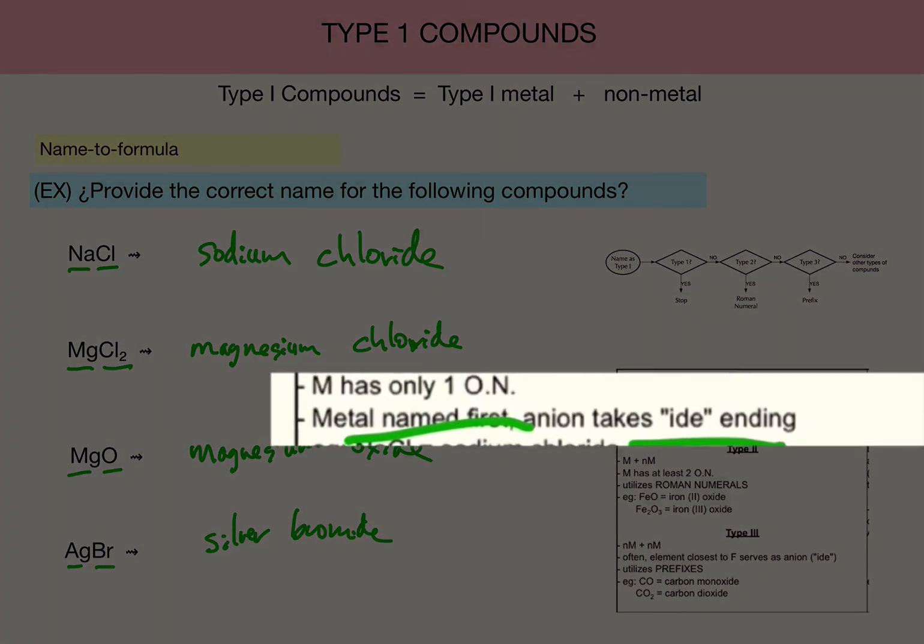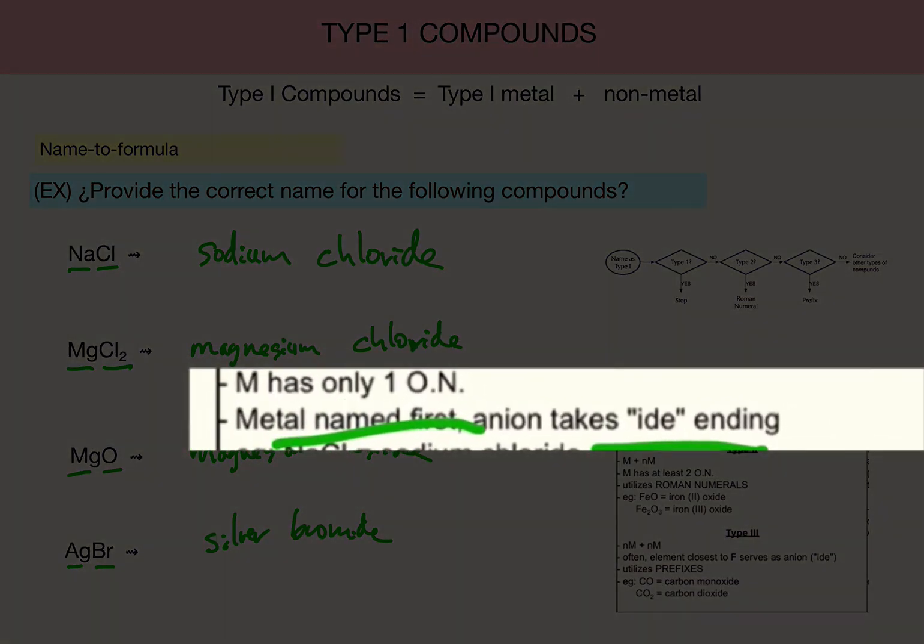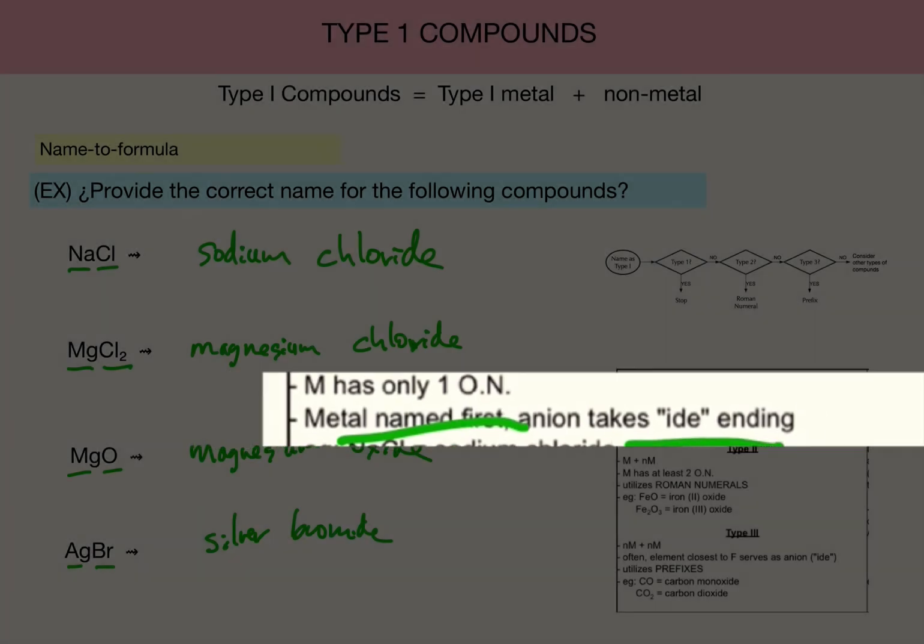Once you clearly identify something as type 1, it's name the metal, and then name the non-metal piece, but change the ending of the non-metal piece to ide.